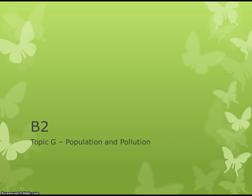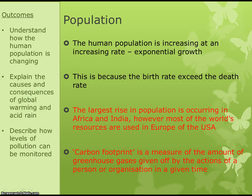Our next topic for Biology 2 is Topic G: population and pollution. First, we need to look at population. Human population is increasing at an increasing rate, and the term for that is exponential growth — it's getting bigger and getting bigger at a faster rate. The reason for this is that the birth rate greatly exceeds the death rate, so more people are being born than are dying, and we keep getting more and more people.